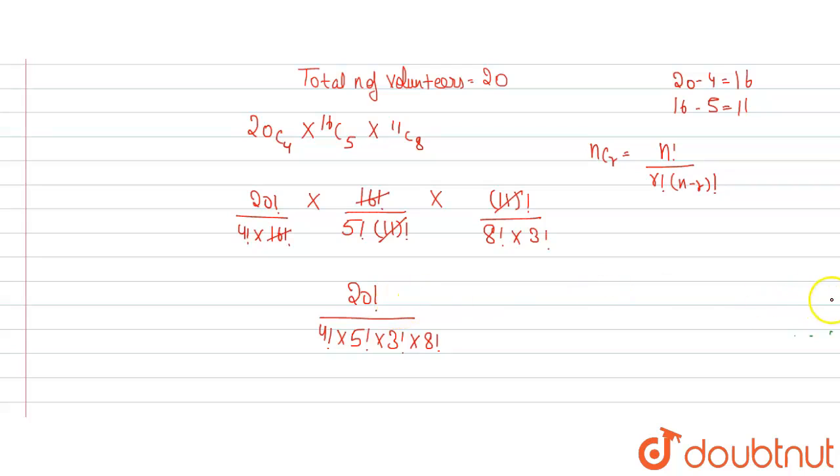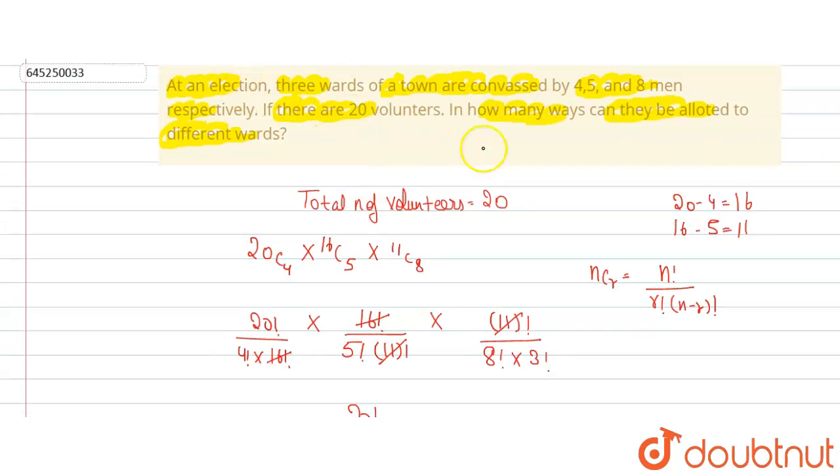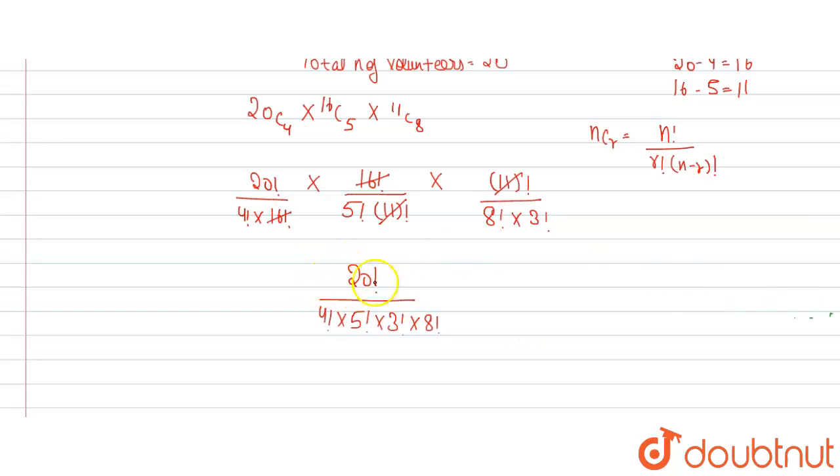Thank you so much for watching the video. I hope you like the solution. In this question, you had to find in how many ways they can be allotted to different wards, so this is the number of ways that they can be allocated.